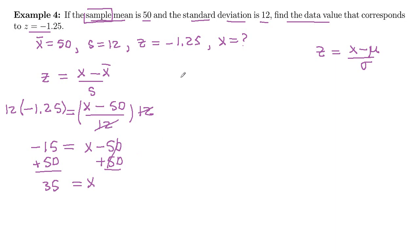So the data value that corresponds with z equals negative 1.25 is 35. Let's see how that looks on our distribution. We'll assume that our data is mound-shaped. Our mean would be in the middle, and that is the 50. So that's an x-value. The z-score that goes with 50 is 0.